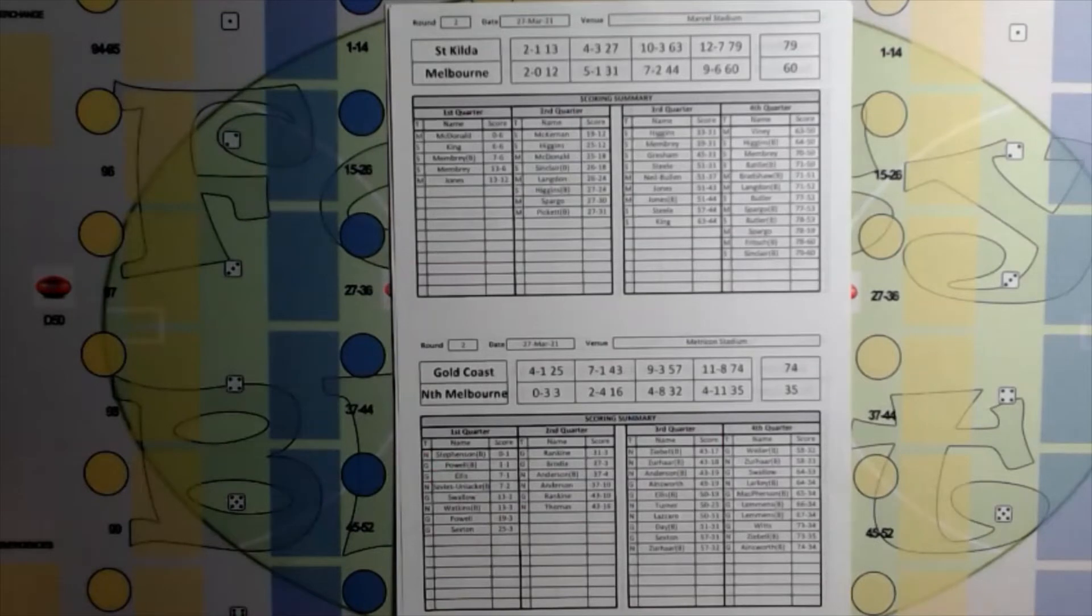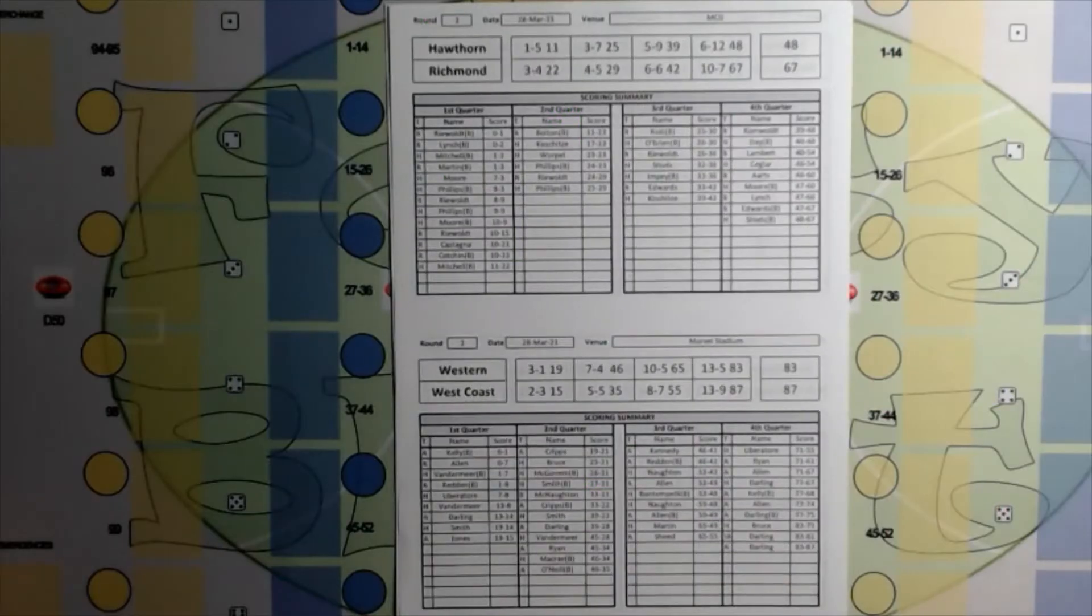St Kilda 12.7.79, Melbourne 9.6.60. Gold Coast 11.8.74, North Melbourne 4.11.35. Hawthorn 6.12.48, Richmond 10.7.67.